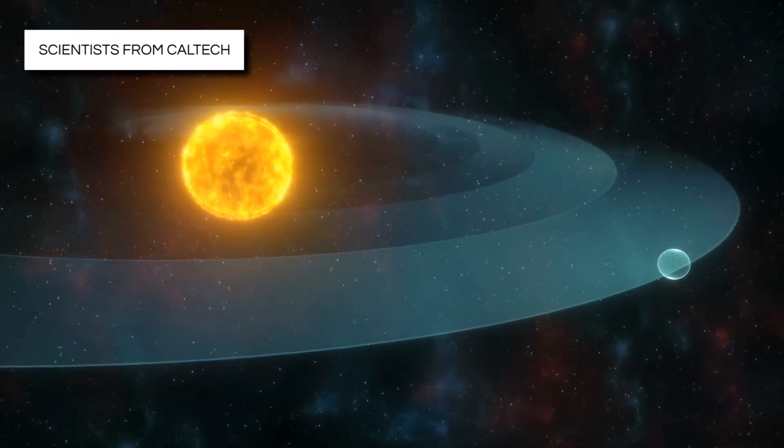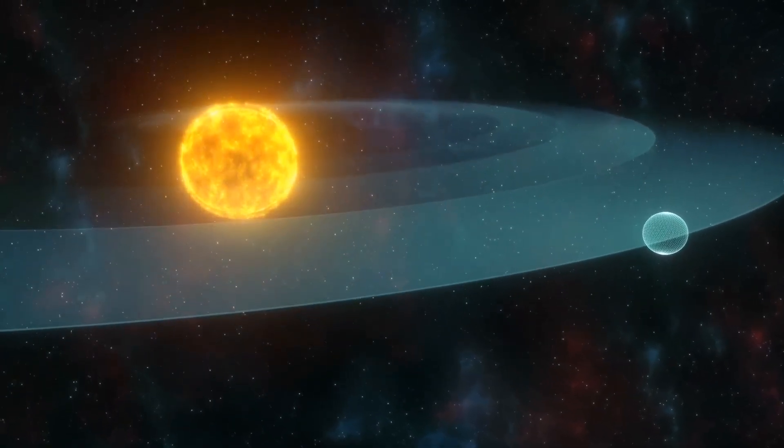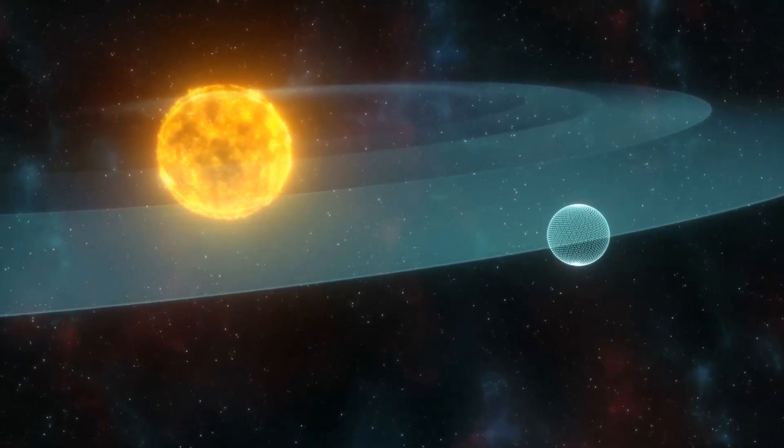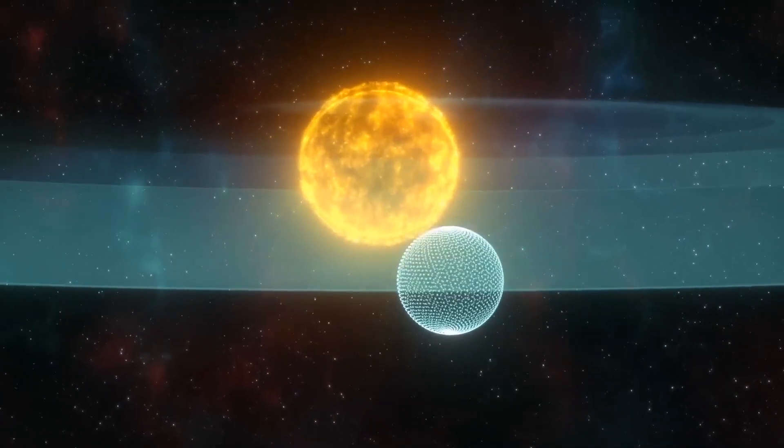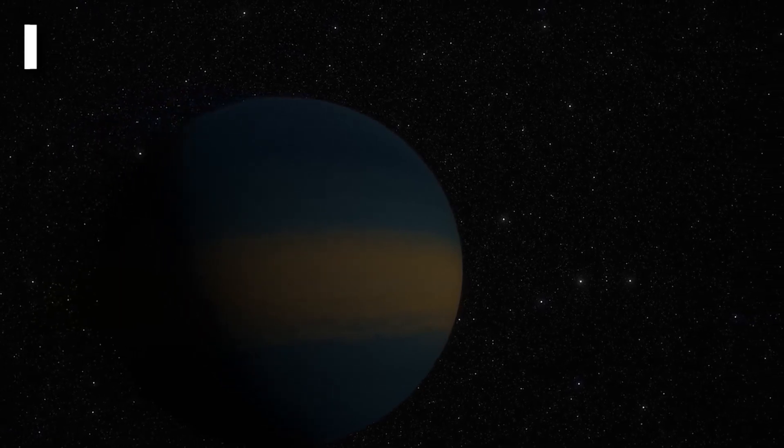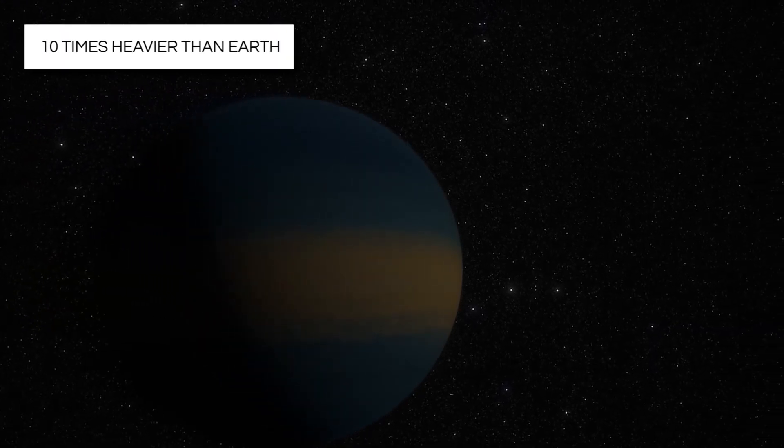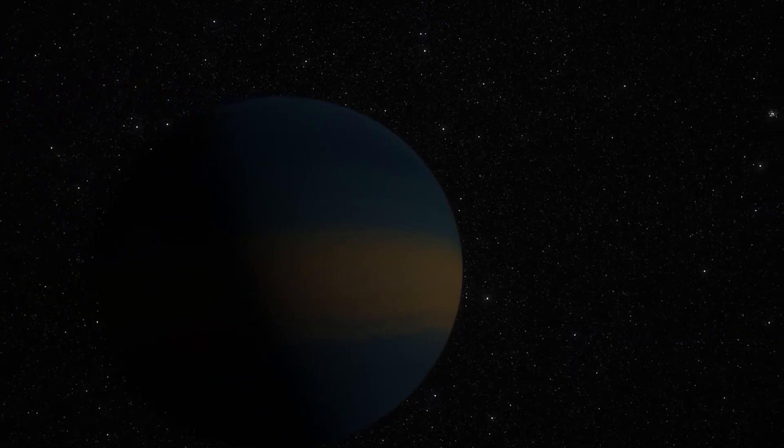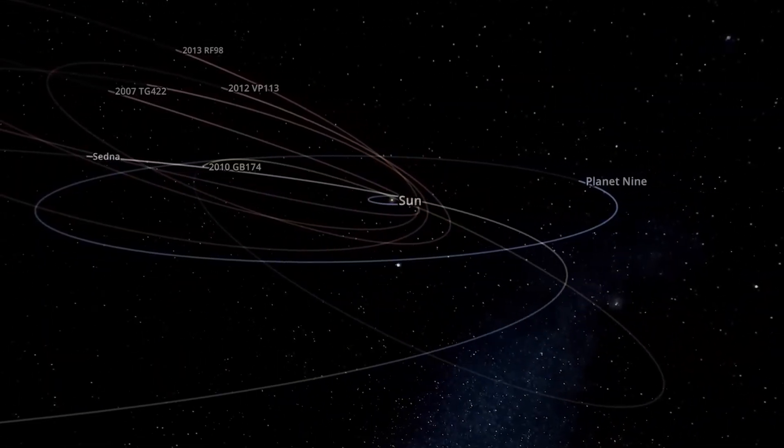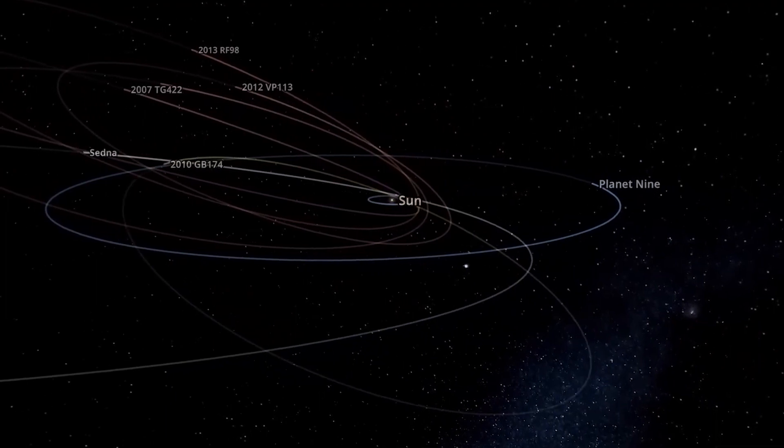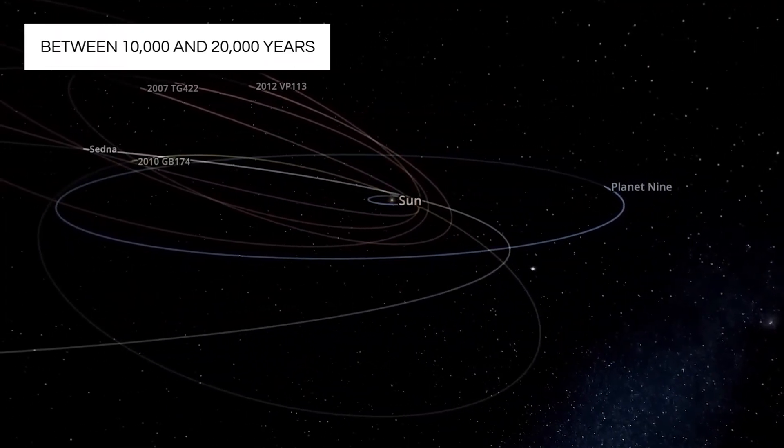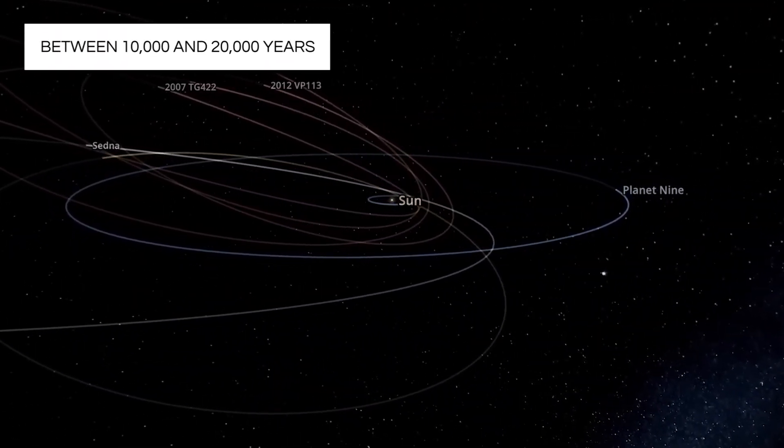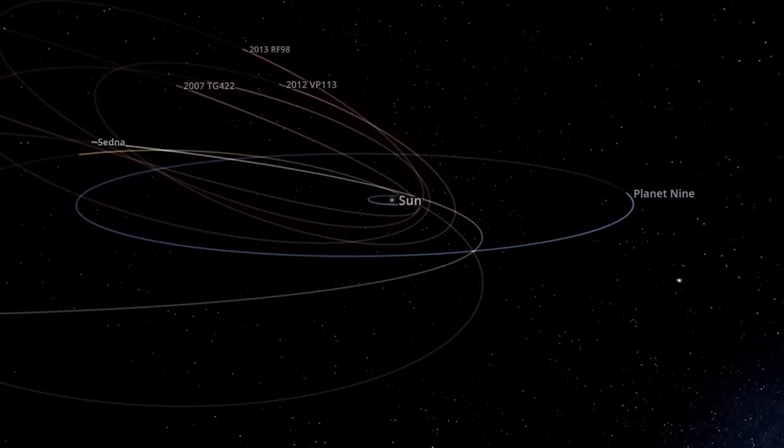Scientists from Caltech have found evidence of a very big planet in the outer part of our solar system. They've called it Planet 9. This planet is huge, about 10 times heavier than Earth, and it's much farther away from the Sun than Neptune. In fact, it takes Planet 9 a very, very long time, between 10,000 and 20,000 years, to go all the way around the Sun.